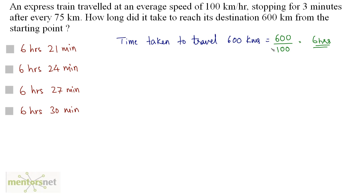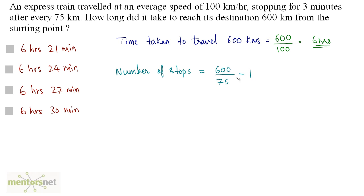So 6 hours is the time taken to travel 600 km without stopping. Now to calculate the total time from the starting point to the ending point, we will need to calculate how many stoppages this train has. It stops every 75 km. So the number of stoppages will be equal to 600 km divided by 75 km, minus 1. Why minus 1? Because the last stop is not countable — we are not going to count the last stop. So 600 by 75 is equal to 8, minus 1, and that is equal to 7 stops in all.